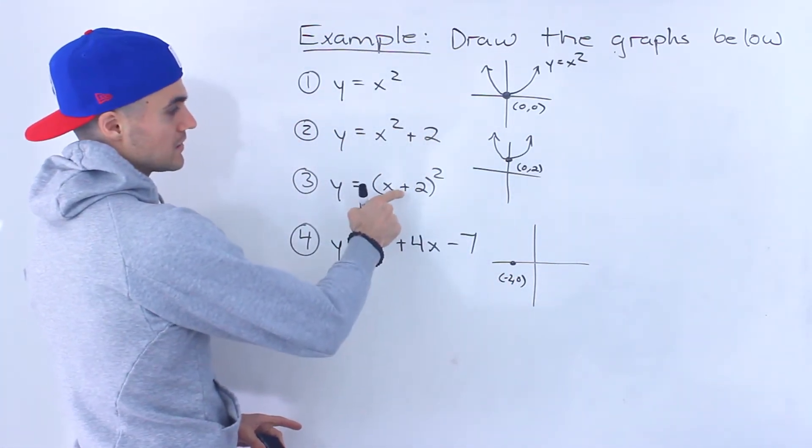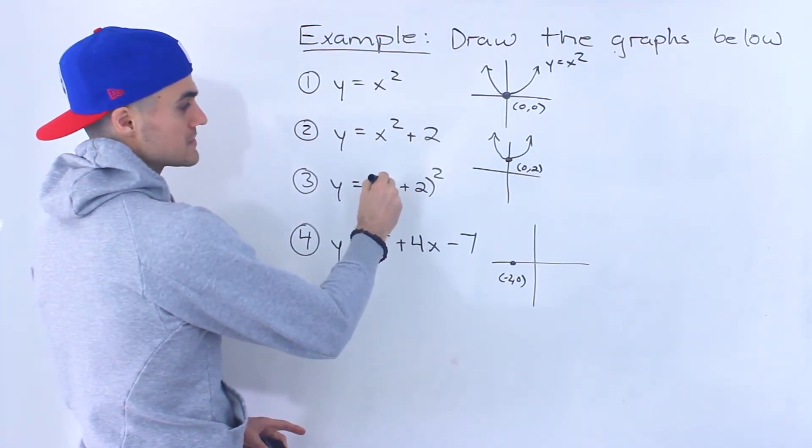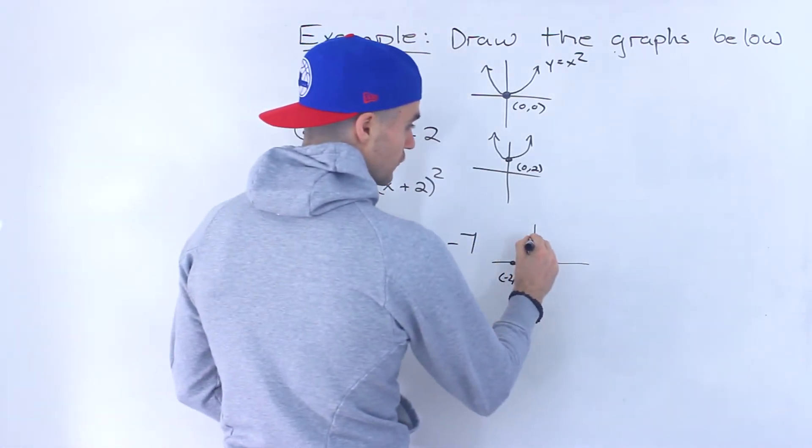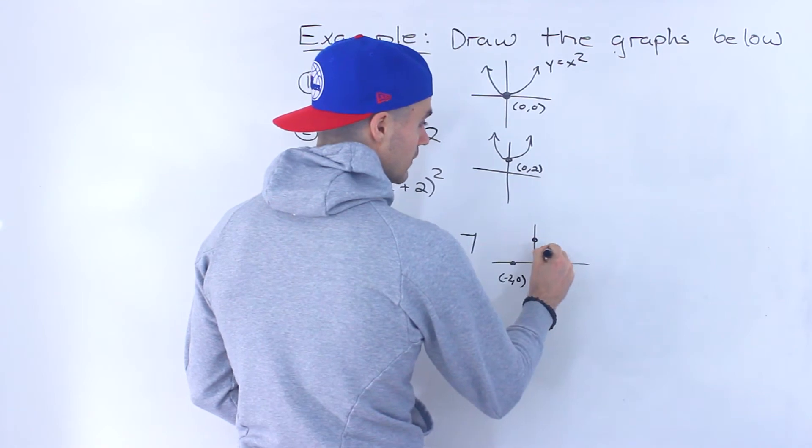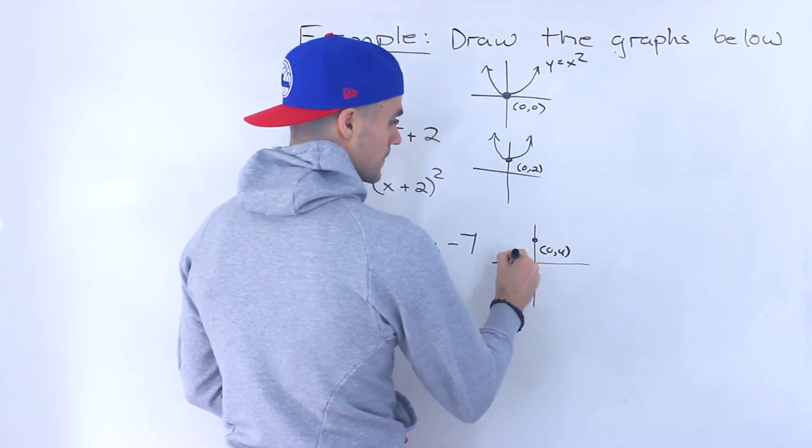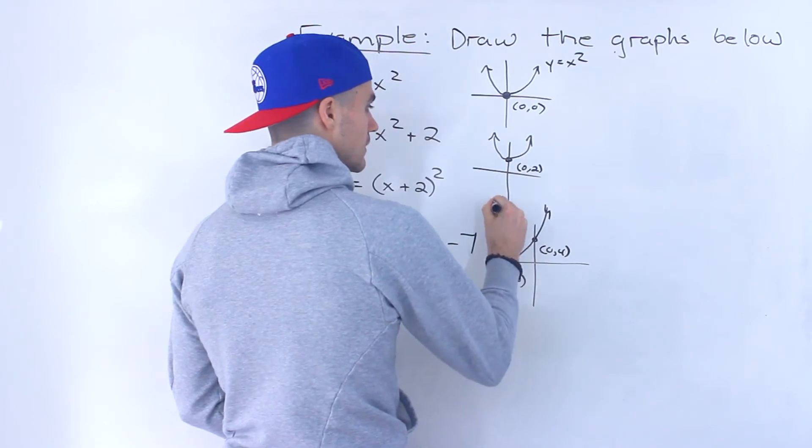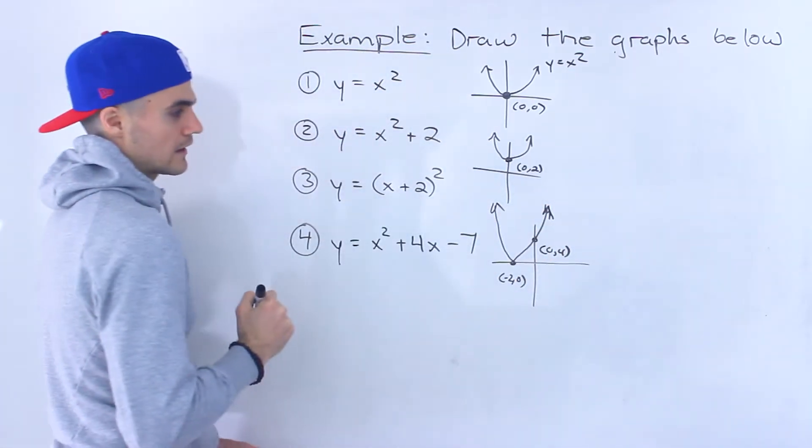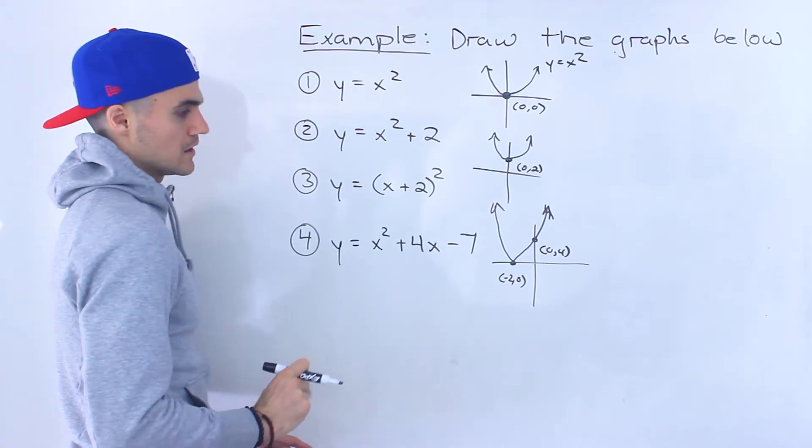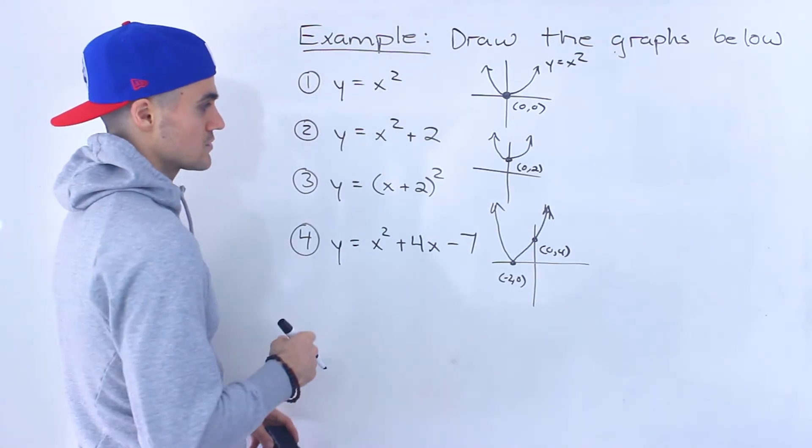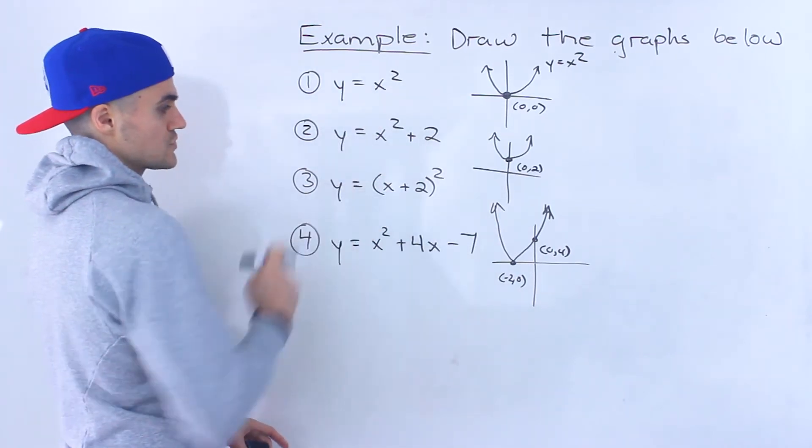We can also get a y-intercept here. You could plug in zero for x and you'd end up with two to the power two, which would be four. So that would be like over here. So you'd get a parabola that basically looks like that. Perhaps not as symmetrical in this drawing, but you get the idea. The vertex would be at negative two and zero. So that's these first three.